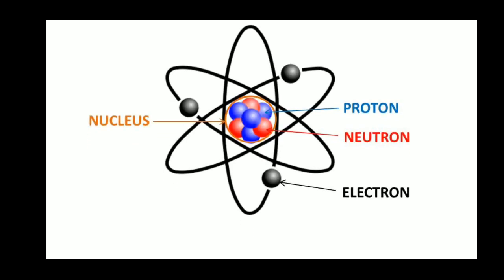You all know this already, so I am not going to deal about this at present. Later we will study about proton, neutron, electron, and nucleus. The center part is called nucleus, which consists of protons and neutrons. The electron, shown as a black dot, revolves around the nucleus. The electron is moving, but the proton is inside the nucleus at rest.